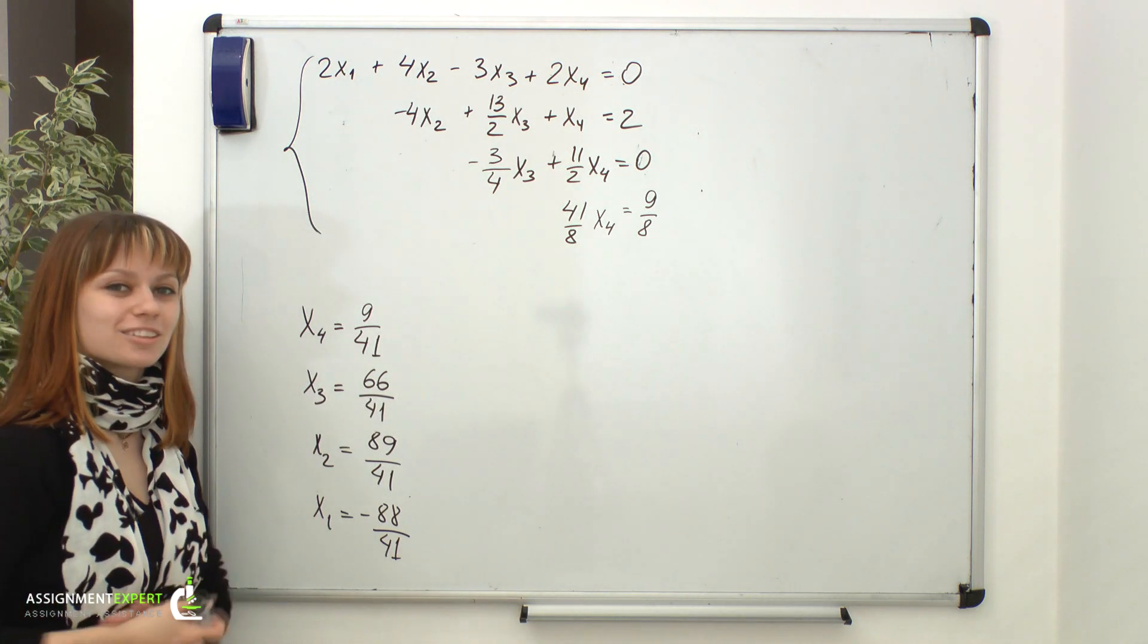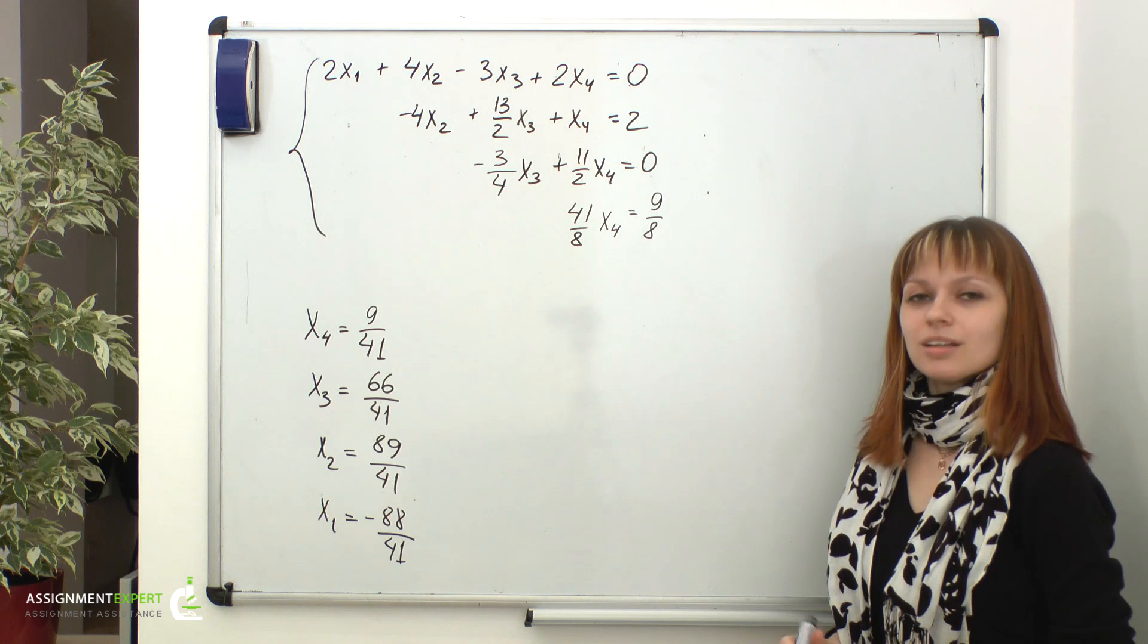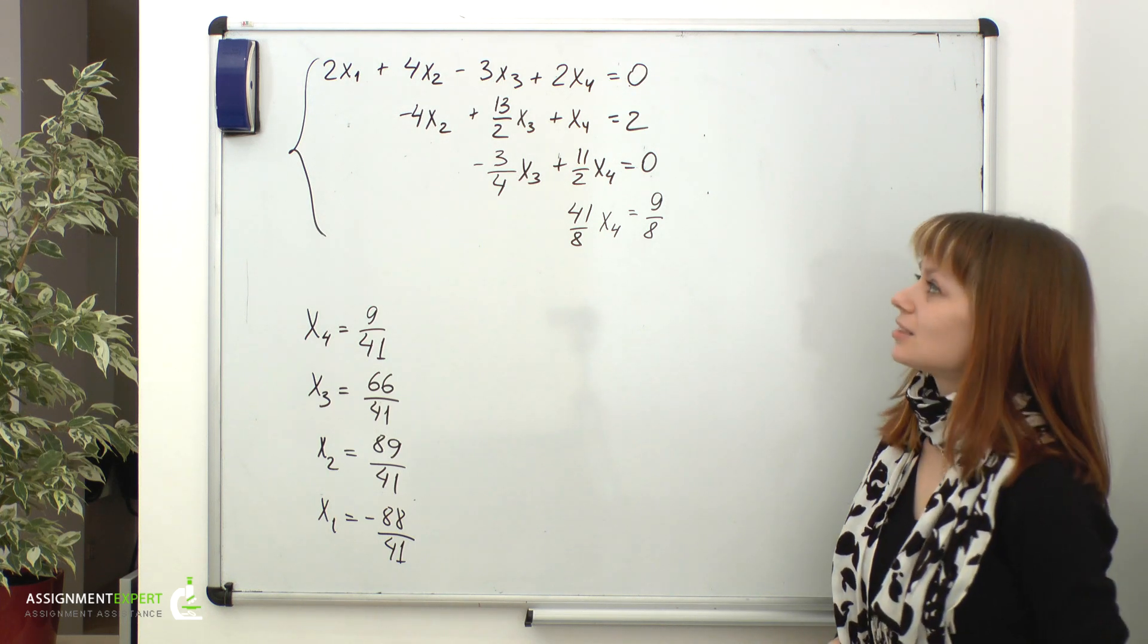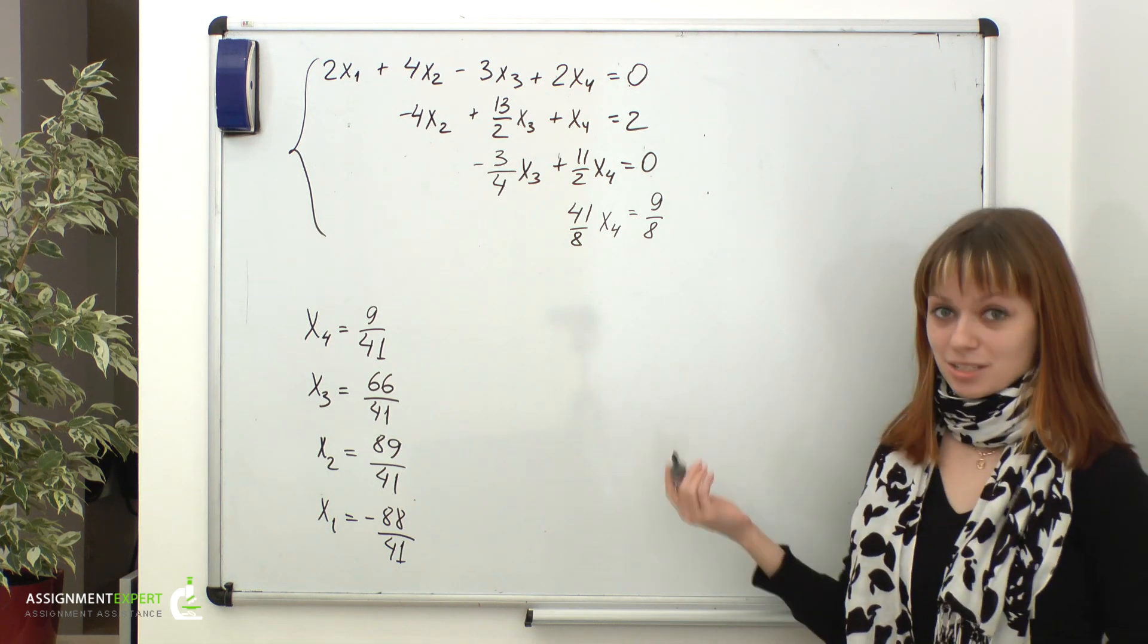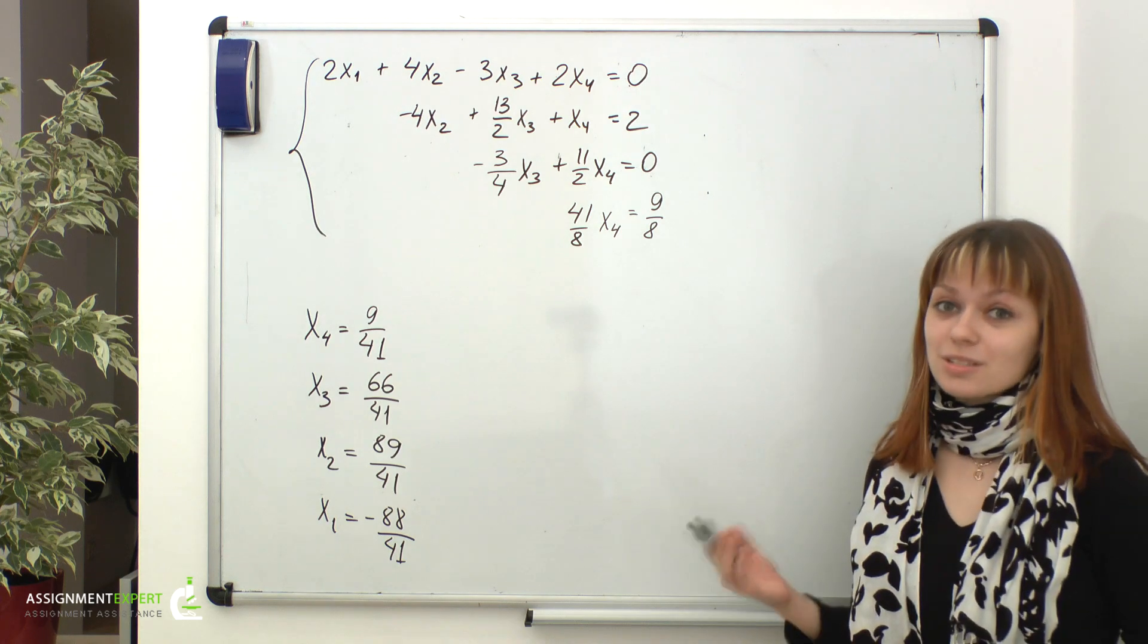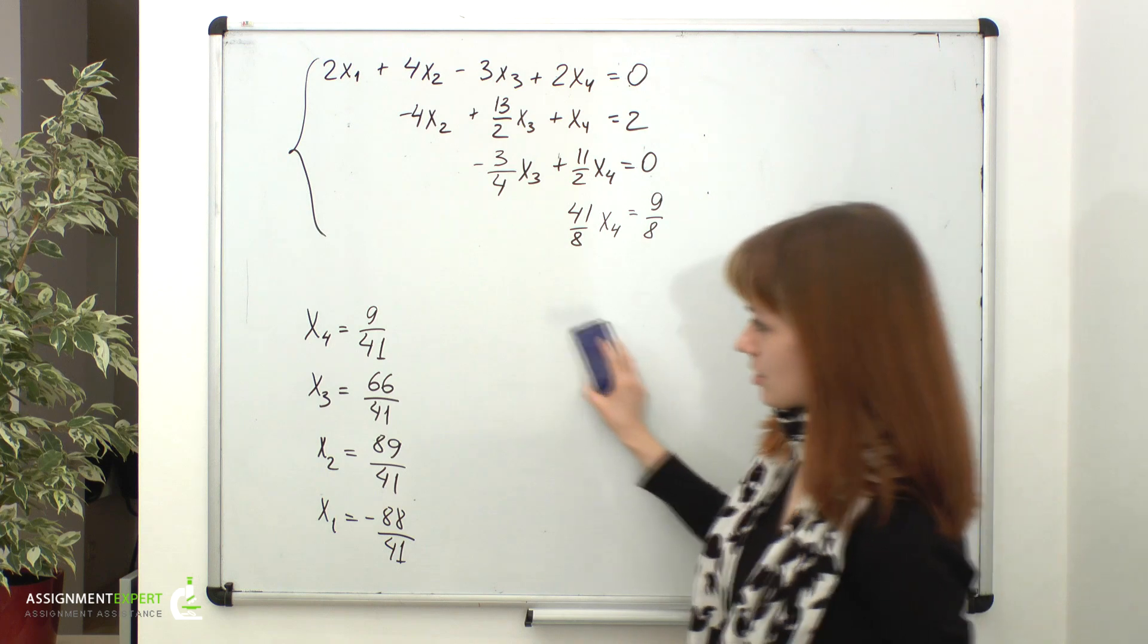You can check it if you like. The system we have considered is called consistent, since it has a solution, and definite, since it has a unique solution, the one we have just found. But, as you are probably guessing, there are also inconsistent and indefinite systems.